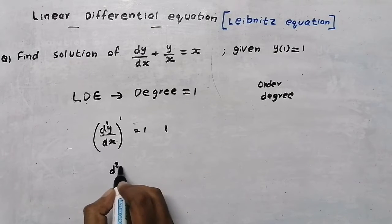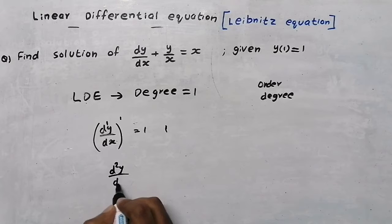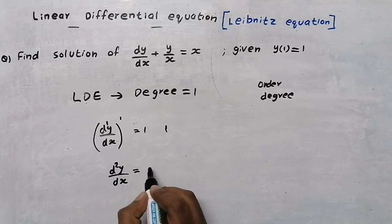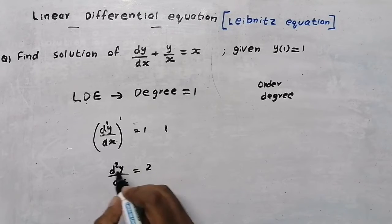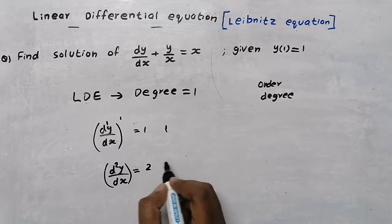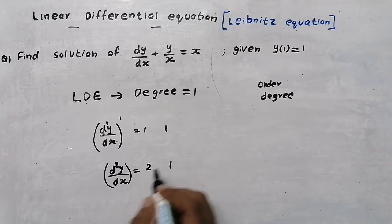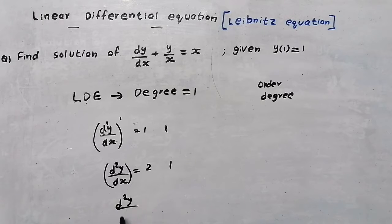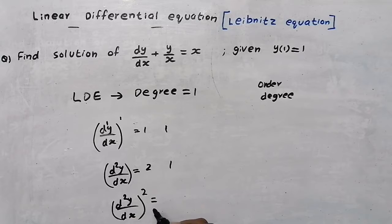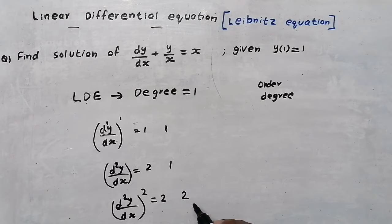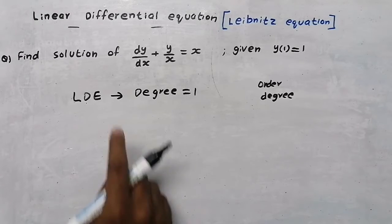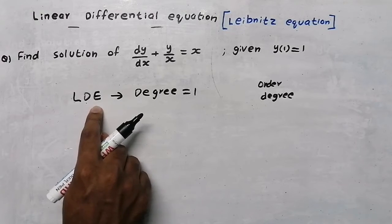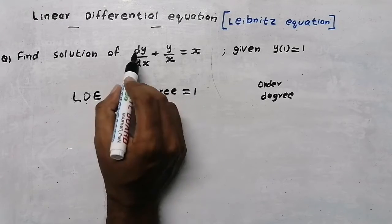For another equation where the order is two, the degree is the power of the derivative, which is one. But for the equation d²y/dx² (all squared), the order is two and the degree is also two. So for a linear differential equation, the degree must equal one.